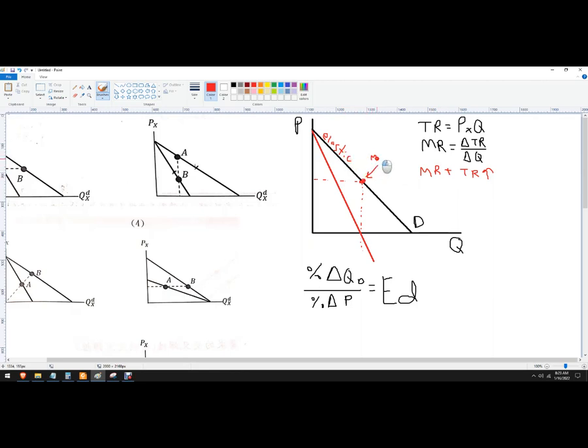At this point here, marginal revenue is zero. You can see that from this part of the curve. That's unit elastic. So total revenue doesn't change. And then down here, by lowering the price, I actually make less money. So when marginal revenue is negative, total revenue falls by lowering the price. We're in the inelastic range.